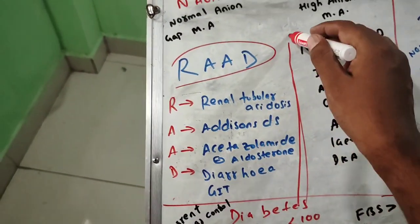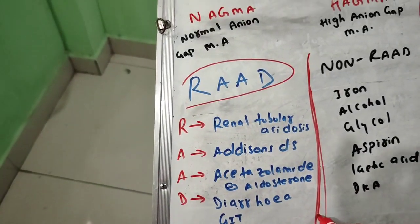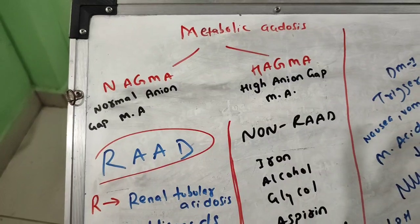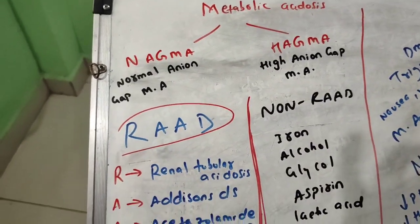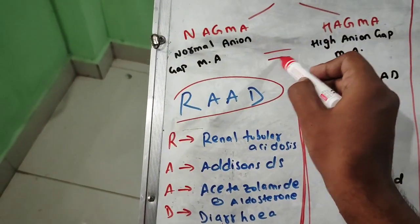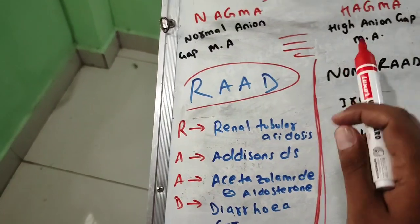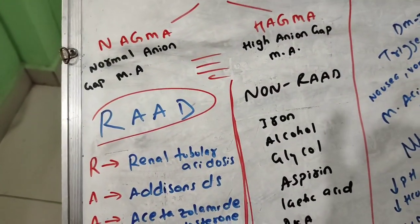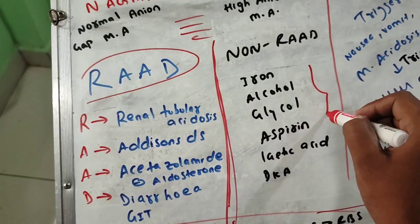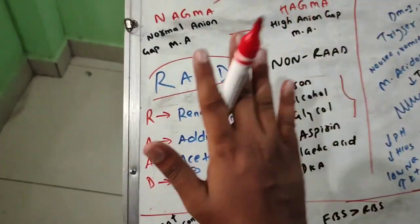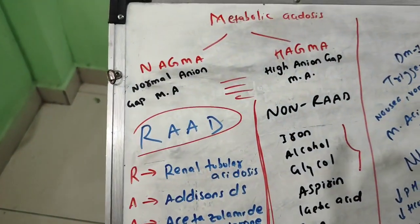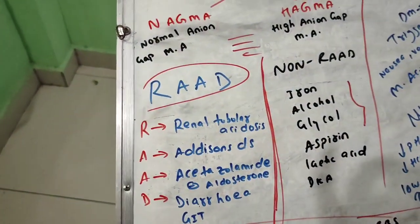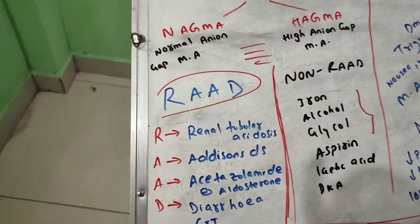Apart from these NAGMA causes, whatever else they ask belongs to HAGMA. They may give three options from NAGMA and one from HAGMA — so remember only the NAGMA causes, and everything else is HAGMA.